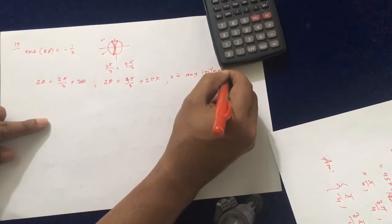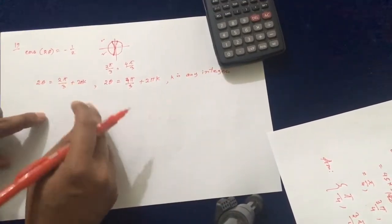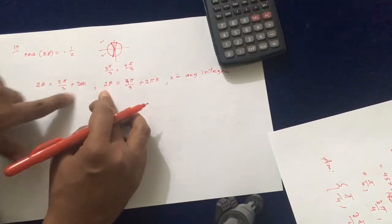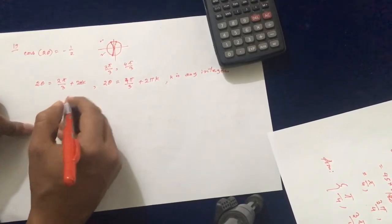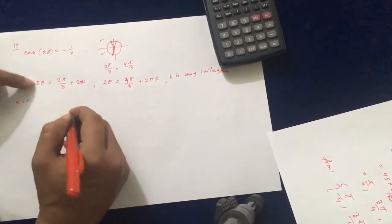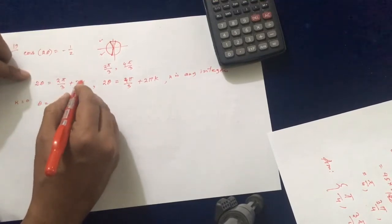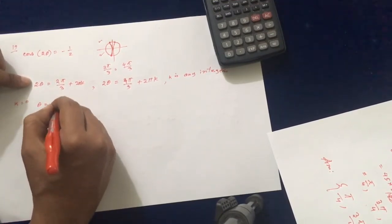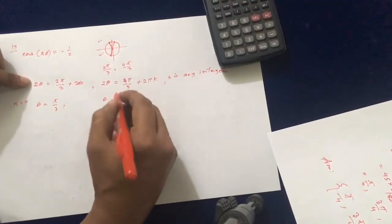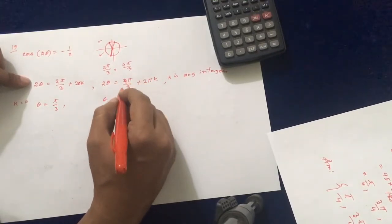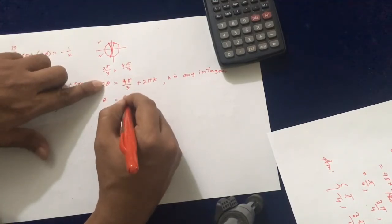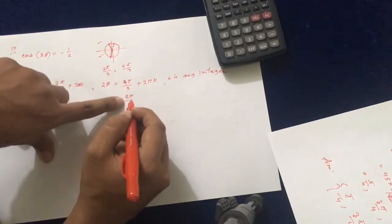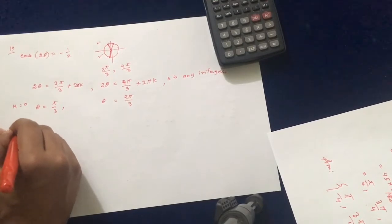Now we substitute values of k. Since 2θ appears on the left, we divide everything by 2 to solve for θ. For k = 0 in the first formula: θ = π/3. For k = 0 in the second formula: θ = 2π/3. These are two answers.